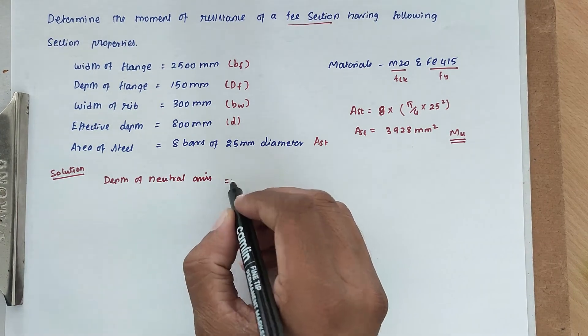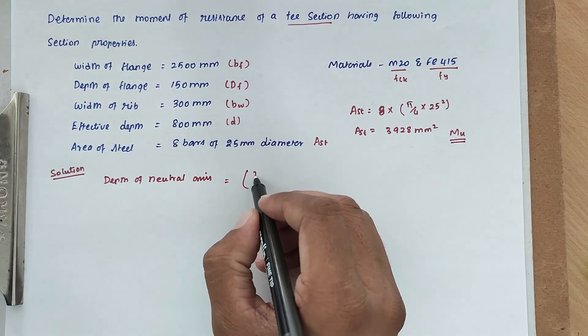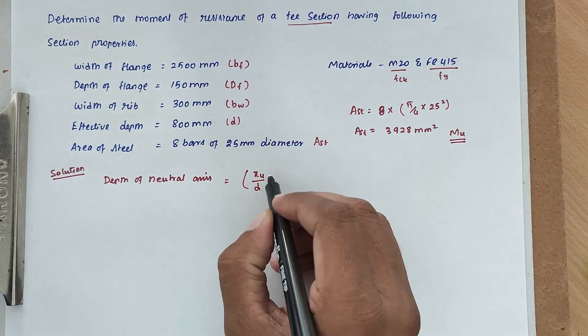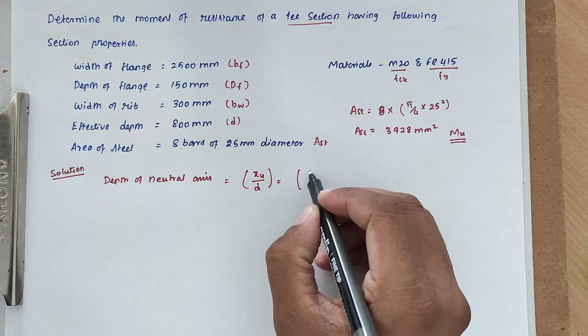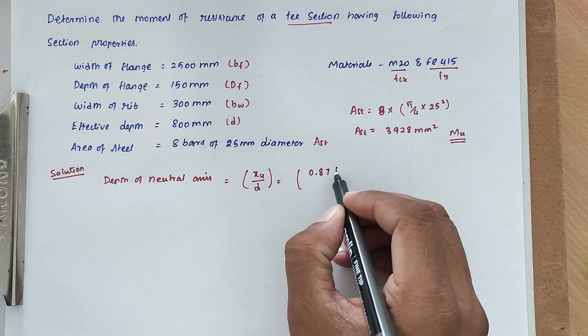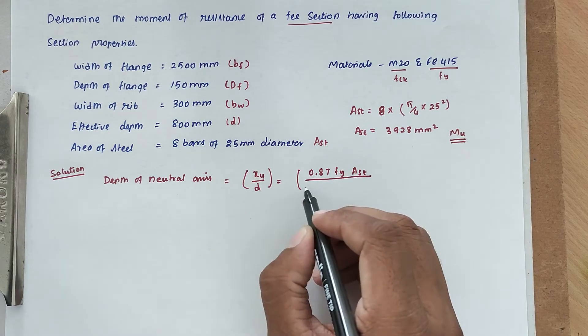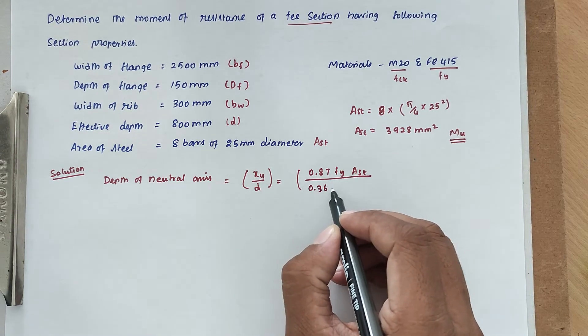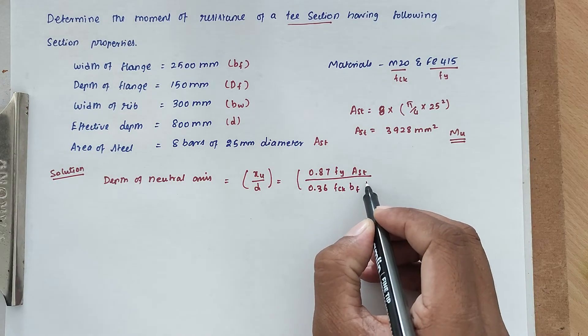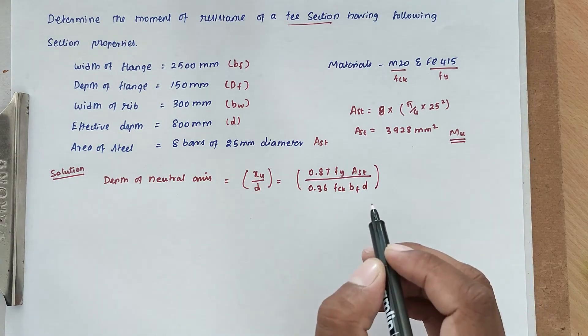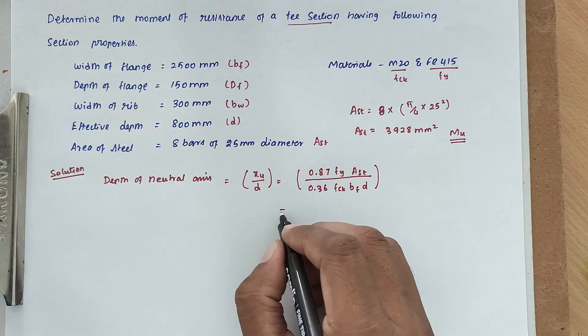The depth of neutral axis formula is XU divided by D equal to 0.87 FY AST divided by 0.36 FCK BF into D. Now we can substitute all the values.